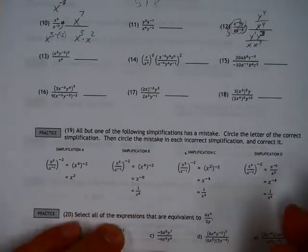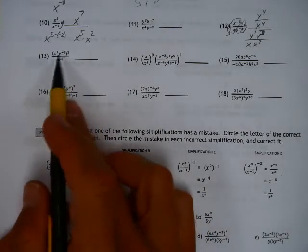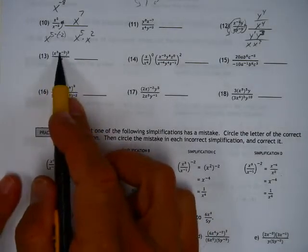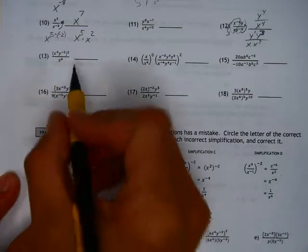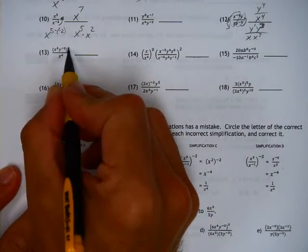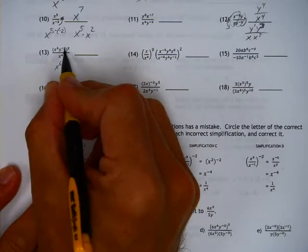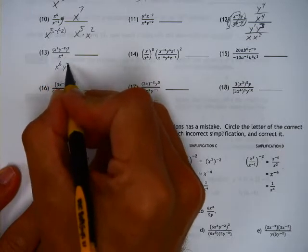Okay, so now it starts to get a little more crazy here. Stuff in parentheses like this. Everything up here is squared. So you raise the power to another power, you're multiplying. So this x to the third to the second becomes x to the sixth. And y to the negative second to the second becomes y to the negative fourth.